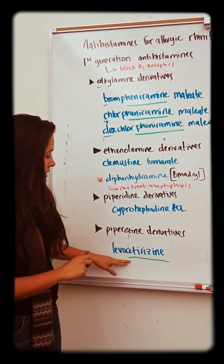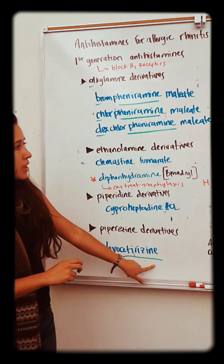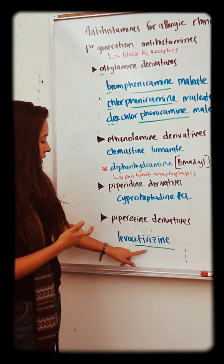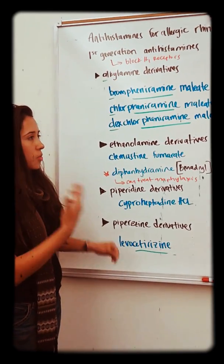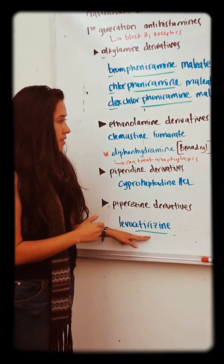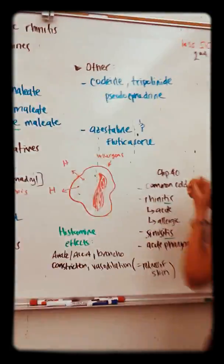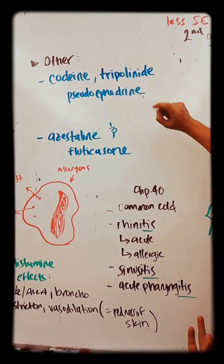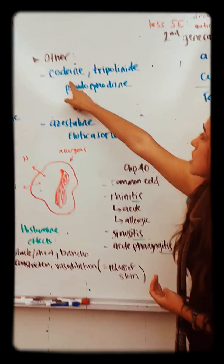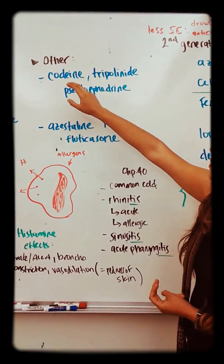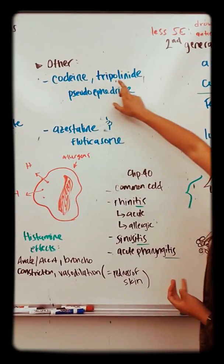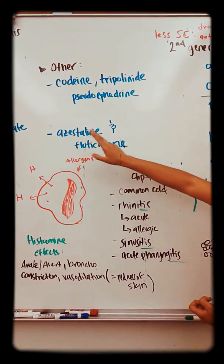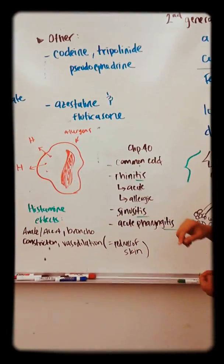Next is levocetirizine — I have this in green because there's a similar second-generation antihistamine we'll come back to. Other first-generation drugs include codeine and triprolidine — codeine will be discussed more later — as well as a combination of pseudoephedrine, and another combination of azelastine and fluticasone.